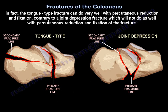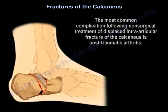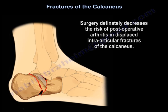Tongue-type fractures can do very well with percutaneous reduction and fixation, contrary to joint depression fractures, which would not do as well with percutaneous reduction and fixation. The most common complication following non-surgical treatment of displaced intraarticular fracture of the calcaneus is post-traumatic arthritis. Surgery definitely decreases the risk of post-operative arthritis in displaced intraarticular fractures of the calcaneus.